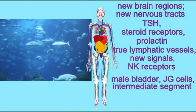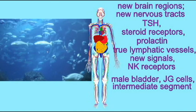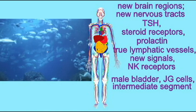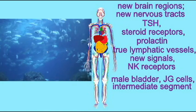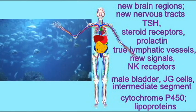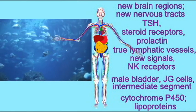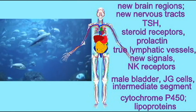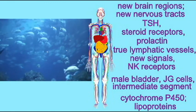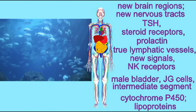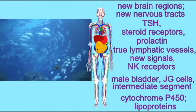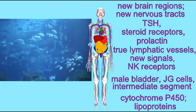The urinary bladder was now present in males in addition to females. There were also JG cells in nephrons and an intermediate segment of the renal tubule. Other changes in Osteichthians included additional cytochrome P450 enzymes in the liver and lipoproteins and clotting factors in the blood. All throughout the body's systems, there are features shared by Osteichthians which non-Osteichthians lack.